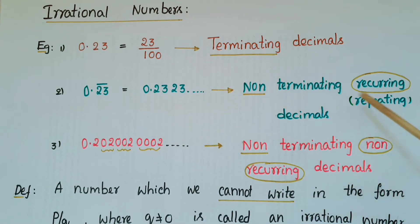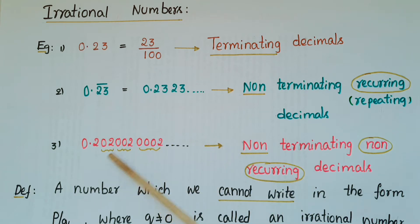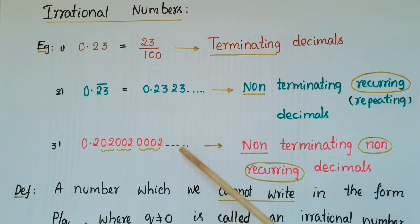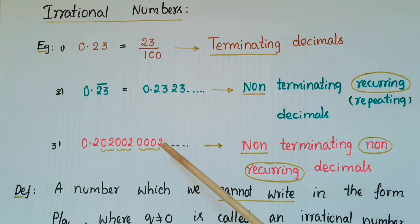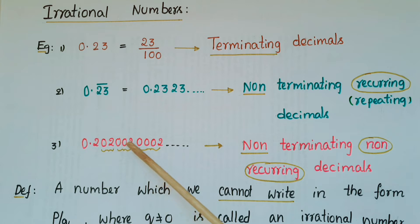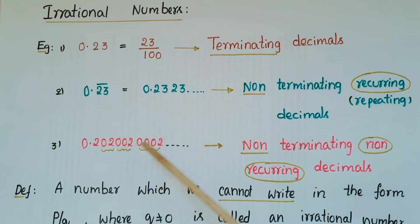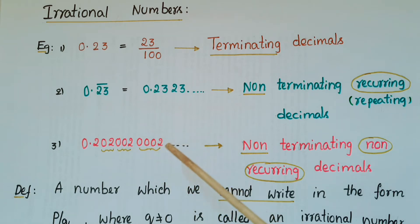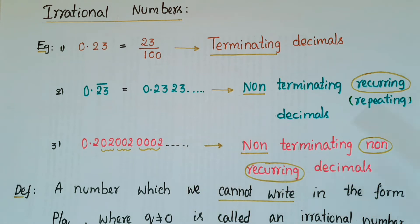These numbers are non-terminating and recurring or repeating decimals. Now consider numbers like 0.202002002002 and so on. Here the decimal representation is non-terminating, and while 02 appears repeatedly, the number of zeros between each occurrence keeps increasing. So these numbers are called irrational numbers — they are non-terminating and non-recurring decimals.